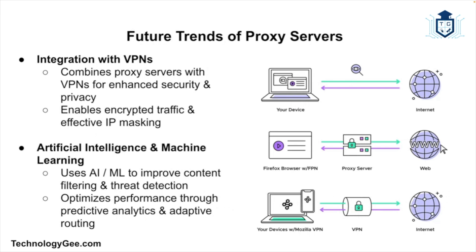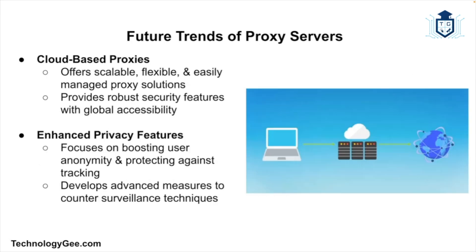The field of proxy servers continues to evolve, driven by advancements in technology and changing user needs. The first trend is integration with VPNs: combining proxy servers and VPNs offers enhanced security and privacy, and users can benefit from features of both technologies such as encrypted traffic and IP masking. AI and machine learning will also play a role in improving proxy server functionality — these technologies can enhance content filtering, detect and mitigate threats, and optimize performance.